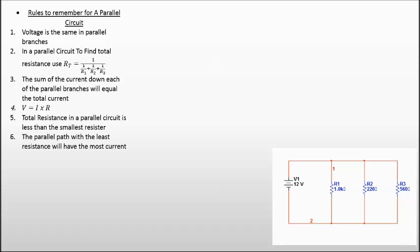Rule number three, the sum of the current down each of the parallel branches will equal the total current. So this is a good rule to remember, especially if you're checking yourself at the end to make sure that you have solved the problem correctly.